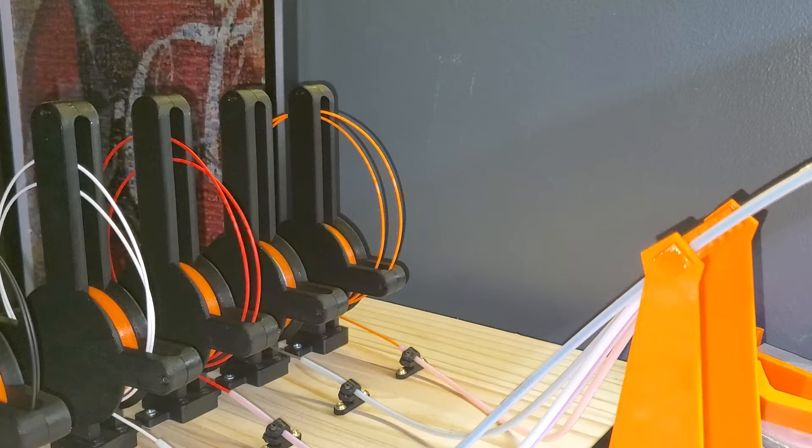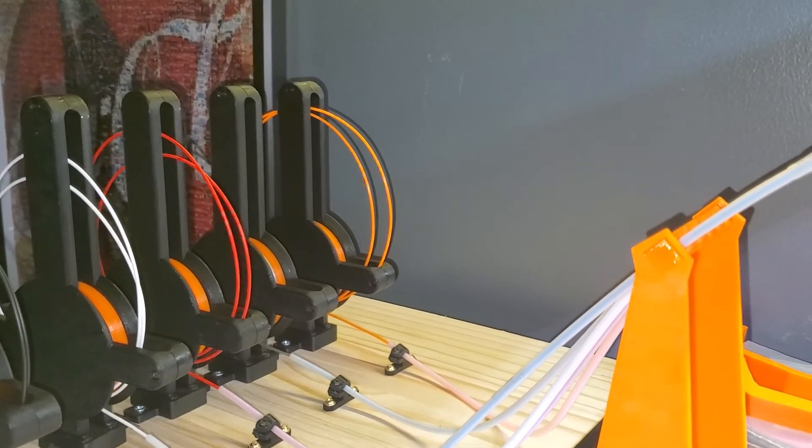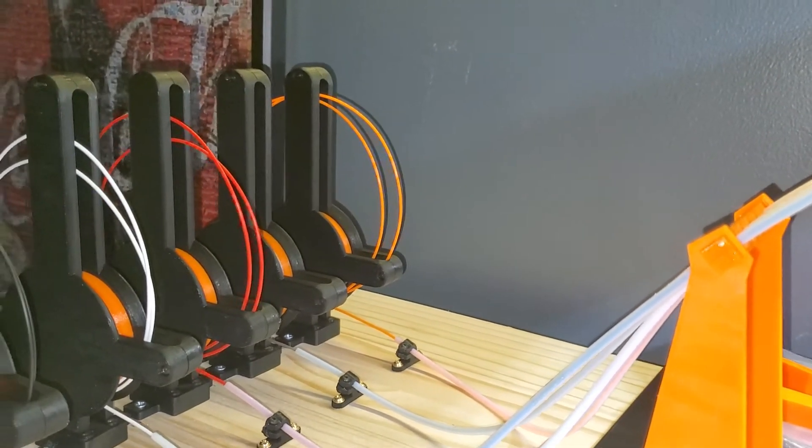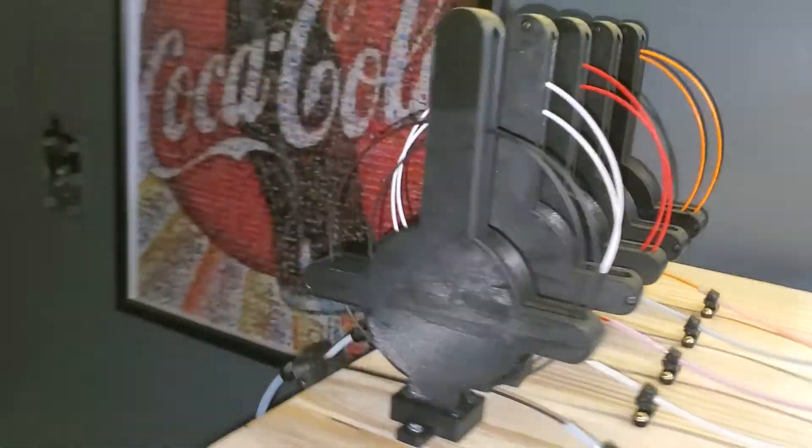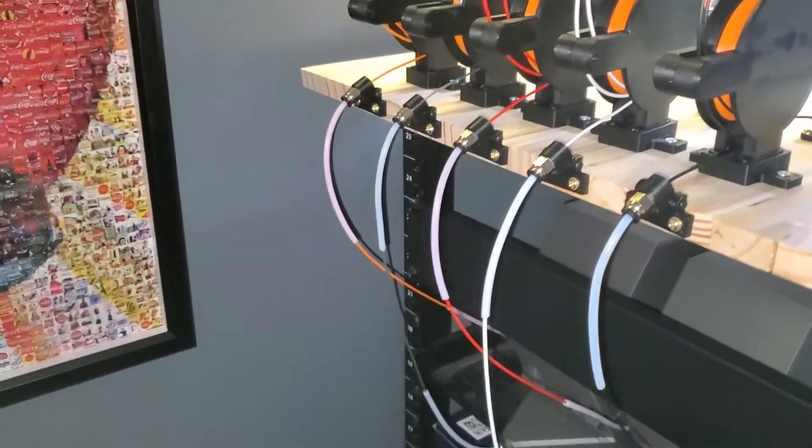At the end of the print, when it ejects the filament, or unloads the filament, it would spool back up there in the buffer so that they do not tangle up with each other down here.